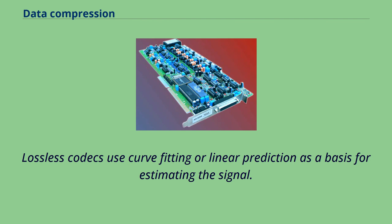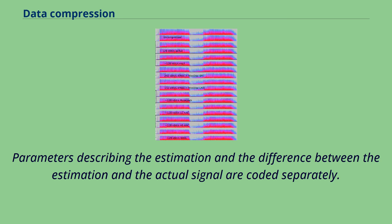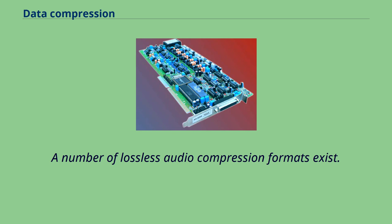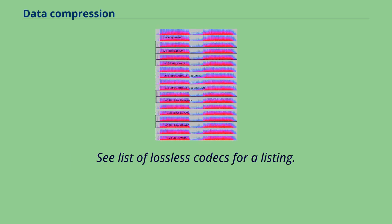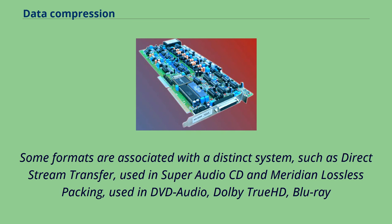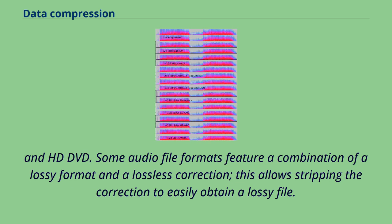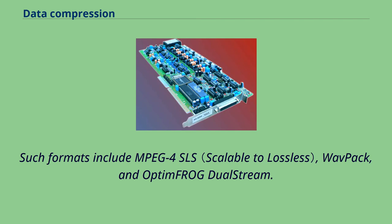Lossless codecs use curve fitting or linear prediction as a basis for estimating the signal. Parameters describing the estimation and the difference between the estimation and the actual signal are coded separately. A number of lossless audio compression formats exist. Some formats are associated with a distinct system, such as direct stream transfer, used in Super Audio CD, and Meridian Lossless Packing, used in DVD Audio, Dolby TrueHD for Blu-ray and HD DVD. Some audiophile formats feature a combination of a lossy format and a lossless correction, allowing stripping the correction to easily obtain a lossy file. Such formats include MPEG-4 SLS, WavPack, and OptimFrog Dual Stream.